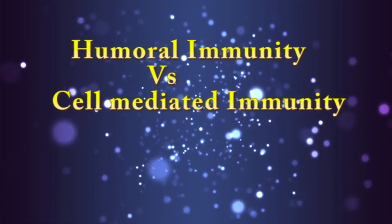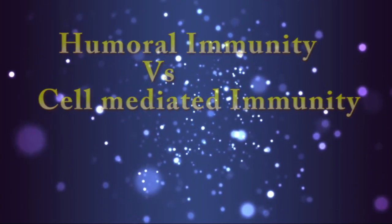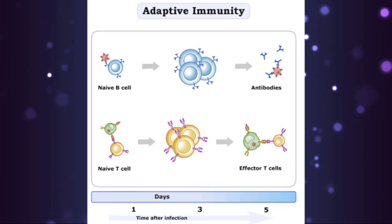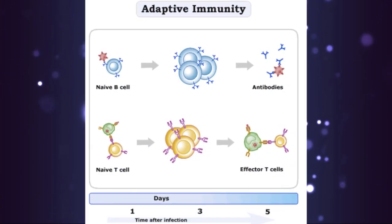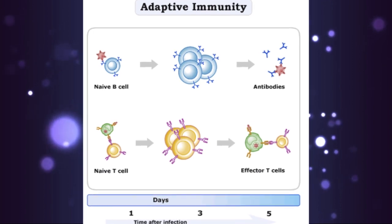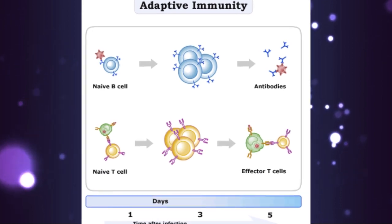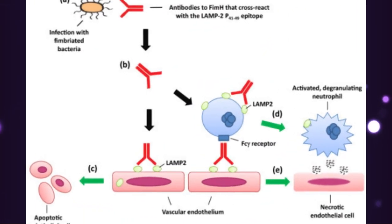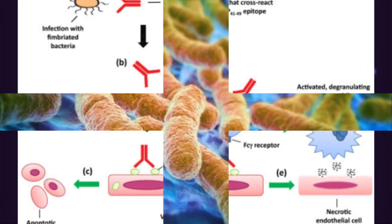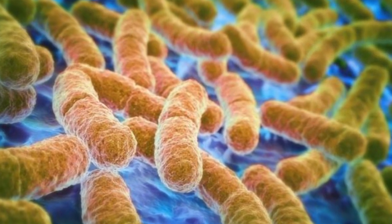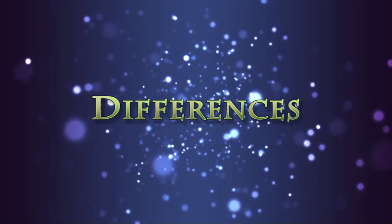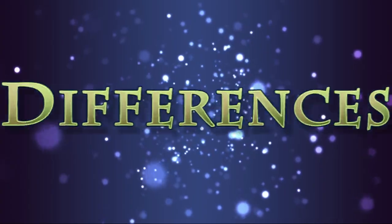Humoral immunity versus cell-mediated immunity. Both humoral and cell-mediated immunity are called adaptive immunity. This immune response is specific to a pathogen and mediated by lymphocytes. Now we are going to see some differences between both systems.